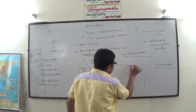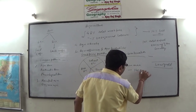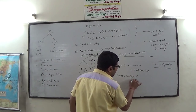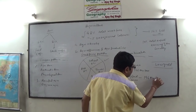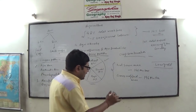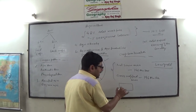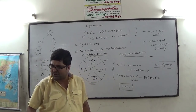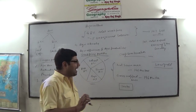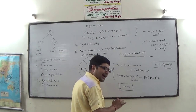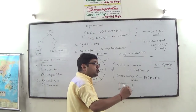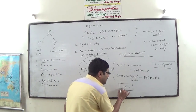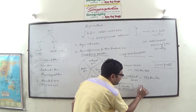The net sown area of the country is 141 million hectares. The gross crop area of the country is 196 million hectares. The difference is simple: if a farmer has 100 hectares and grows only rice in one agricultural year, his net sown area is also 100 hectares. But if after harvesting rice he sows wheat on the entire 100 hectares in the same agricultural year, the net sown area remains 100 hectares but the gross crop area becomes 200 hectares.